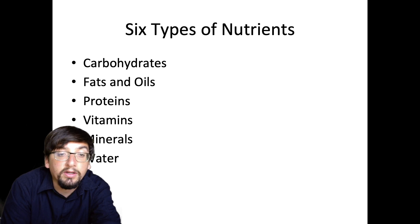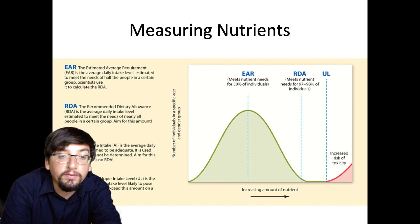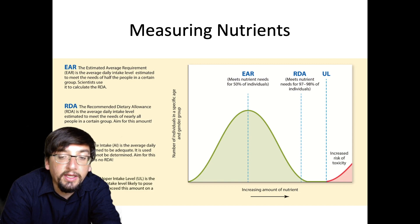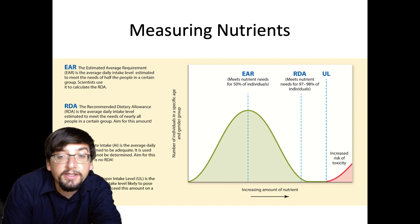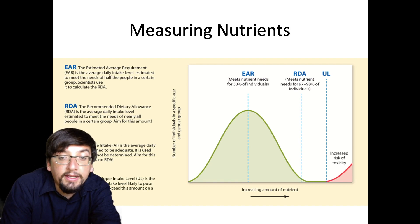Next up is measuring nutrients. This is actually a graph right out of your book, and you want to make sure you know all of these because they'll come up throughout the course. The EAR — Estimated Average Requirement — is how much of a nutrient you need on average per day, calculated across the entire population. If you're getting the EAR, that is only enough for 50% of the population, so if you're larger or more active than average, you may not be getting enough.